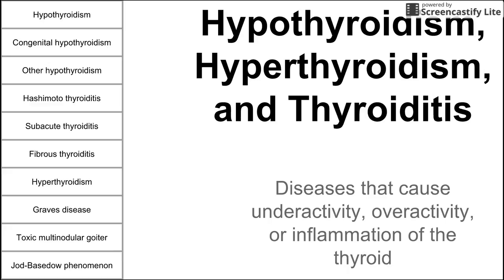The list of diseases is broken down into those that cause hypothyroidism, those that cause hyperthyroidism, and the thyroiditises, which can start with hyperthyroidism, end in hypothyroidism, sometimes cause both, sometimes cause neither — so they're placed in a middle category. We have a lot to get through, let's get started.